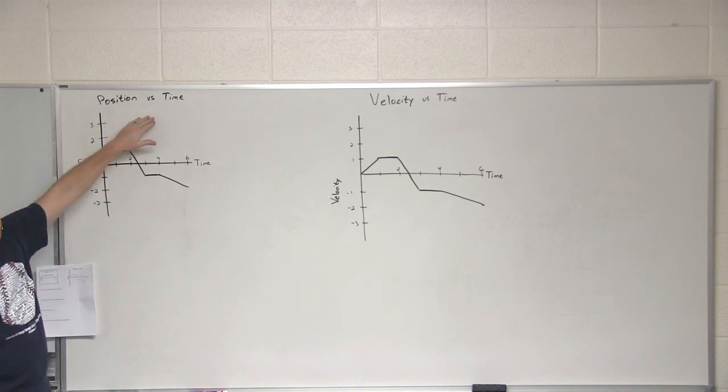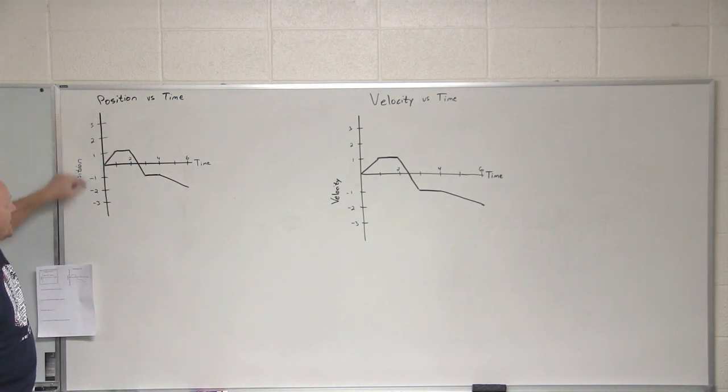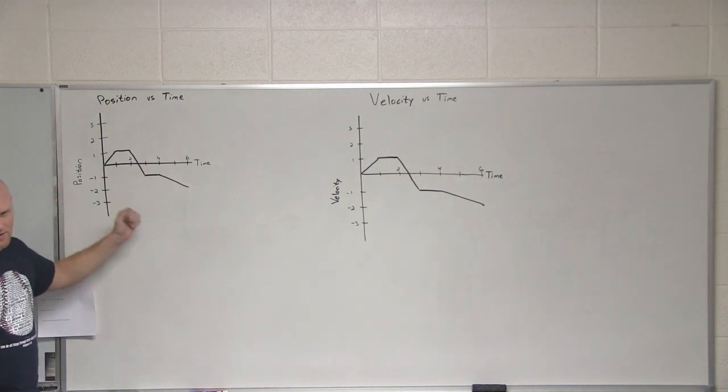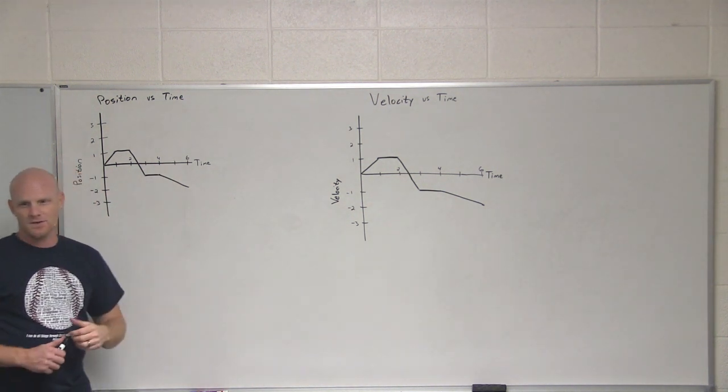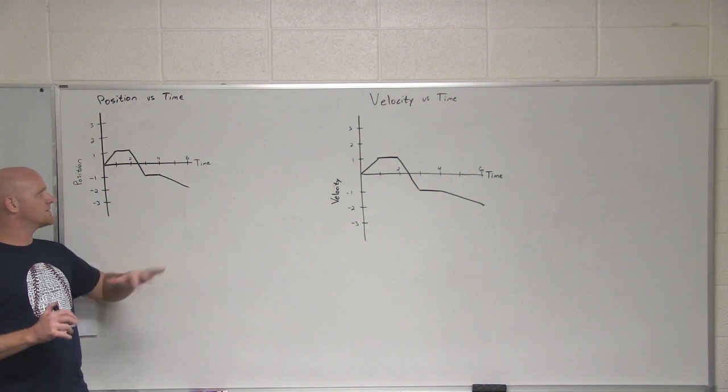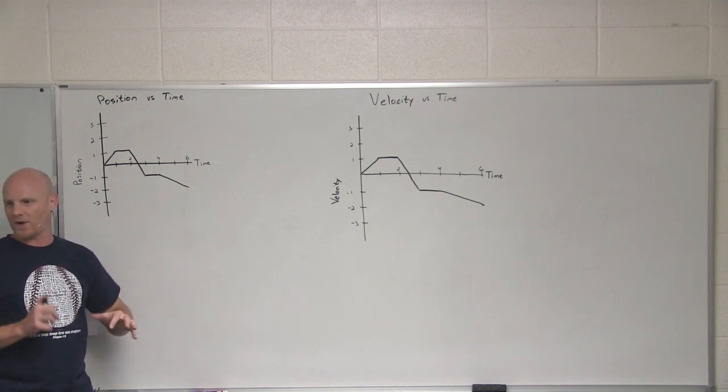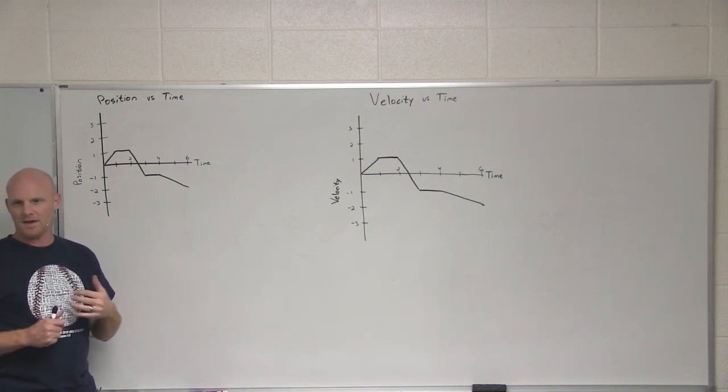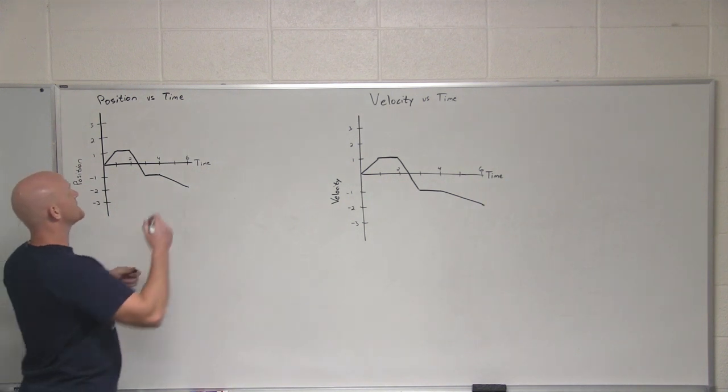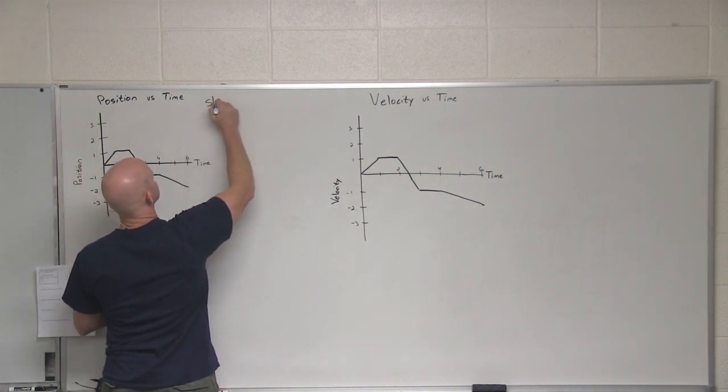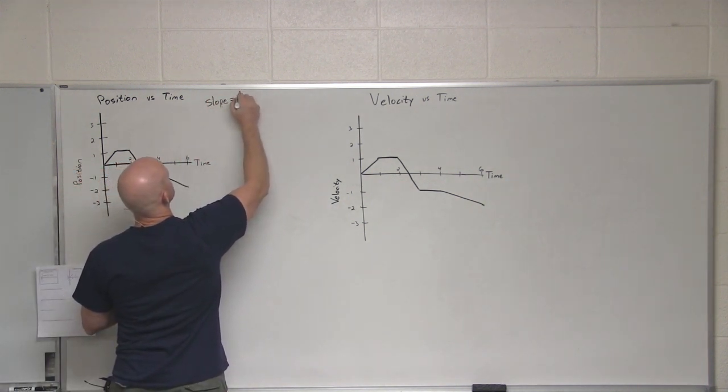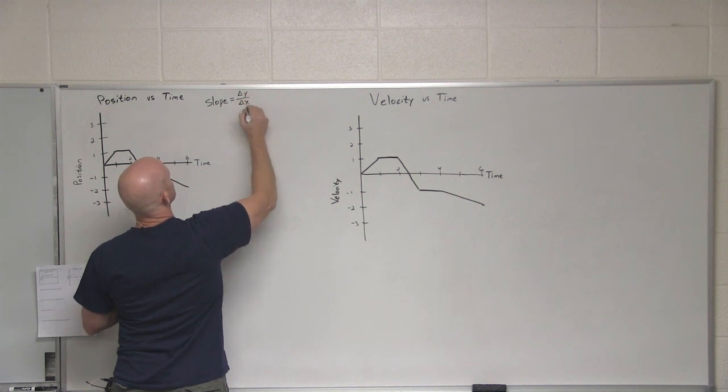Let's start with position versus time. So here we've got position on the y-axis, we've got time on the x-axis. Somebody remind me, so kind of like a basic definition of slope of a graph, slope of a line. Yeah, rise over run. Or in this case, slope is change in y over change in x.